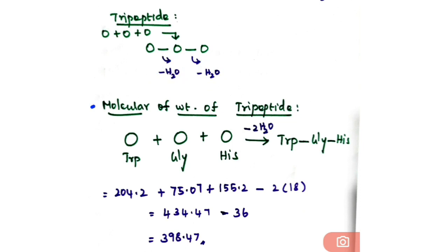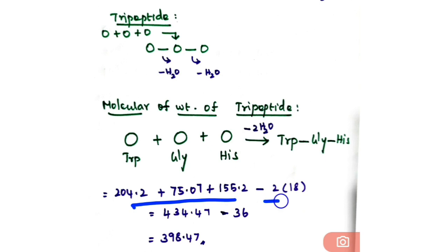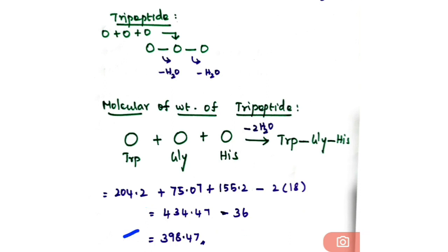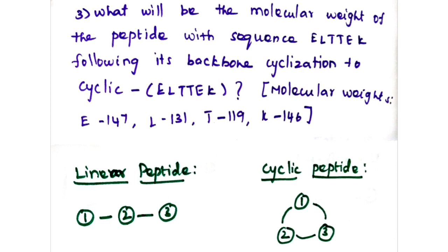To calculate the molecular weight of this tripeptide of tryptophan, glycine, and histidine: molecular weight of tryptophan is 204.2, glycine is 75.07, and histidine is 155.2. First, sum up the molecular weights of these three amino acids, then subtract the molecular weight of two water molecules (2 × 18 = 36). Summing the three gives 434.47, minus 36 equals 398.47 daltons.